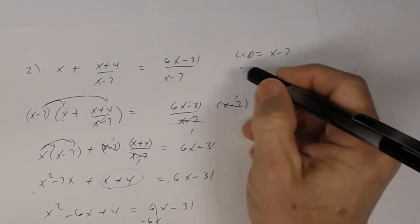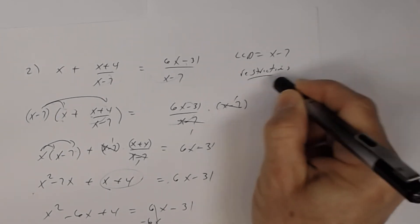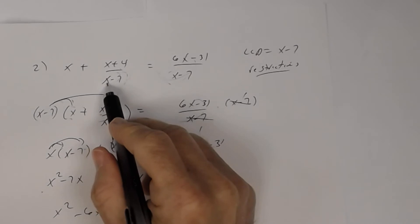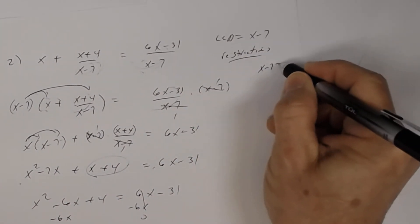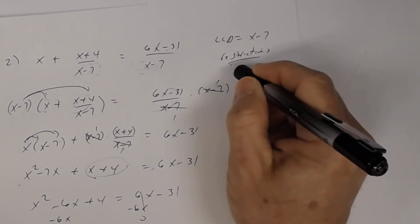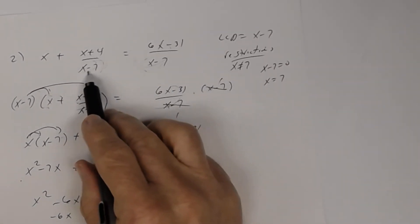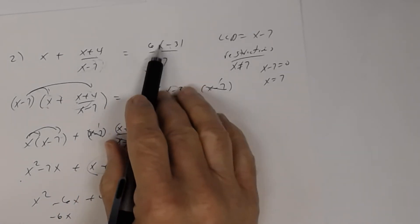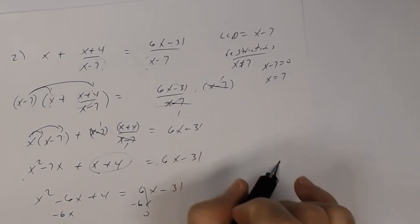Before going on, remember I have to find the restrictions. What makes this denominator zero? x minus 7 equals zero when x is 7. So your restriction is that x cannot equal 7, because if x were 7, this denominator would be zero and the fraction would be undefined — same thing here.